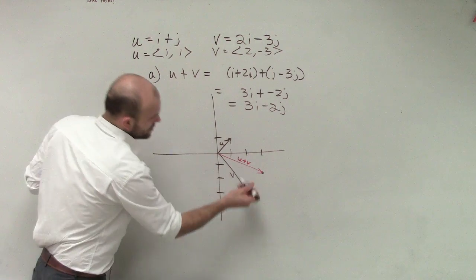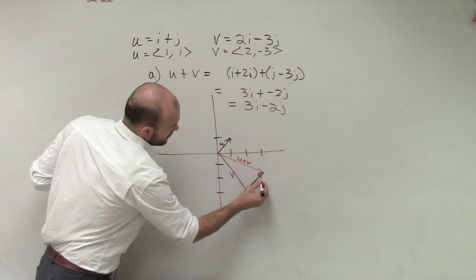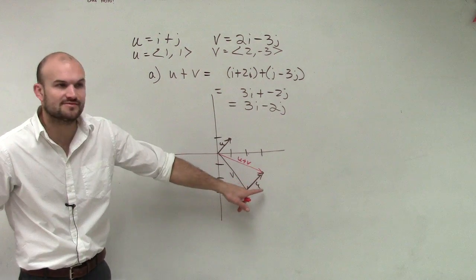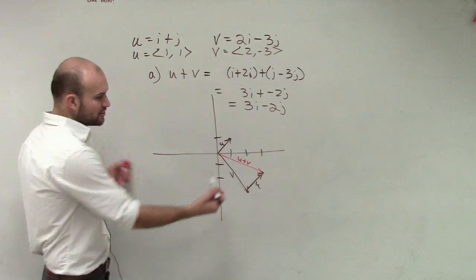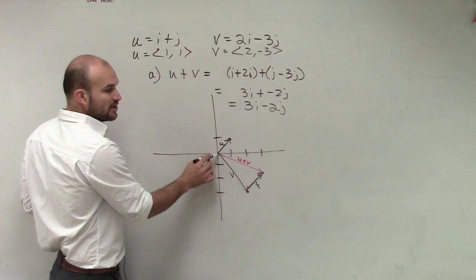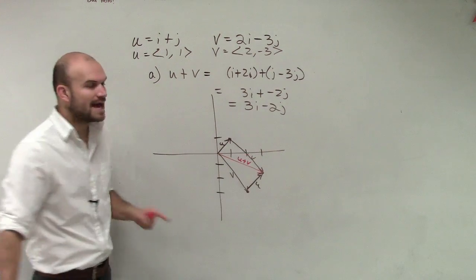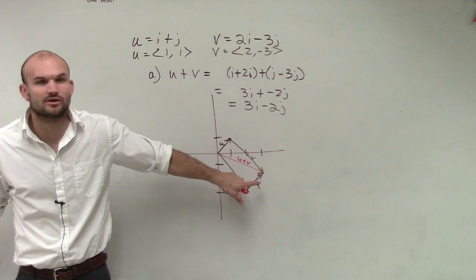And when you do that, when you take u and if I transpose u to over here, you can see it gets me to the end of my vector. I could also transpose v, the initial point of v, to the terminal point of u. And if I do it that way, you can also see you're going to get your resultant vector.